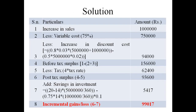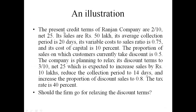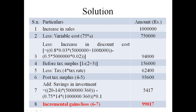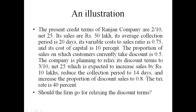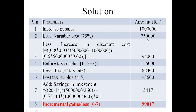Let us evaluate the solution step by step. Due to the change in policy, the increase in sales is Rs. 10 lakh. Sales are expected to increase by Rs. 10 lakhs. Less variable cost — that is 75% — because the variable cost to sales ratio is 0.75. Then we calculate the increase in discount cost, since we moved from a 2% to 3% discount rate.